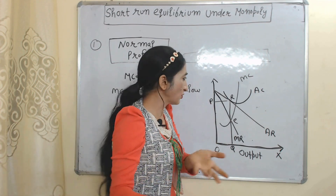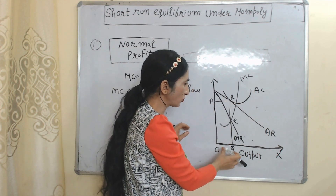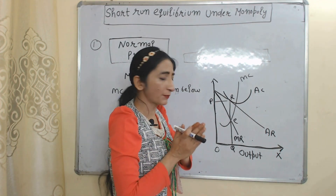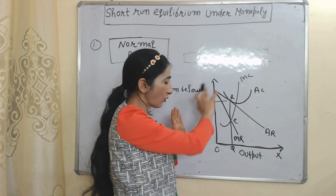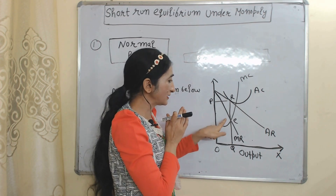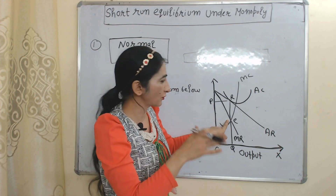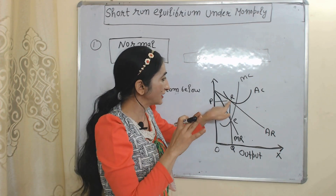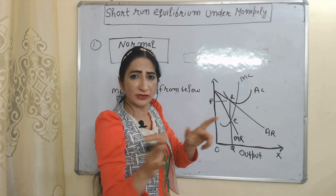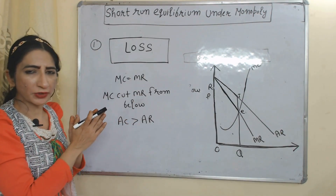So clearly, at OQ amount of output we are receiving a normal profit because all conditions of normal profit are satisfied at point E: MC equal to MR, MC cuts MR from below, and at point R, average cost is equal to average revenue.